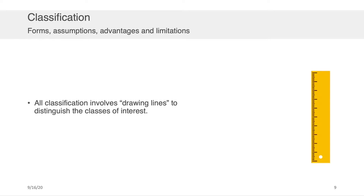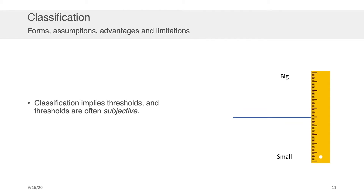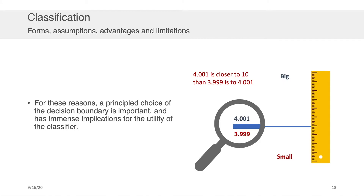Now philosophically, all classification involves drawing lines of some kind. Those lines may not be one-dimensional, but at the end of the day you have to create a decision boundary between A and B — black and white, red and blue, and so on. Returning to the words big and small: if I want to discriminate big from small, how do I do that? Where do I draw the line? What I'm trying to show here is that classification thresholds are subjective.